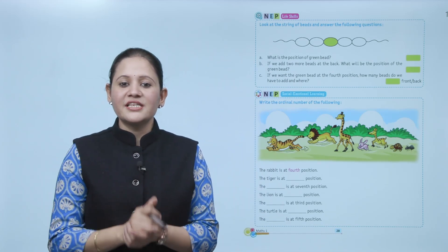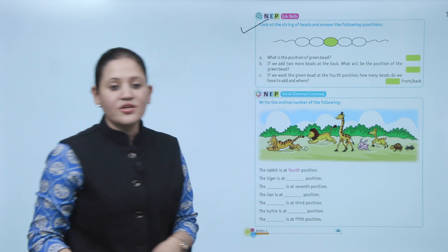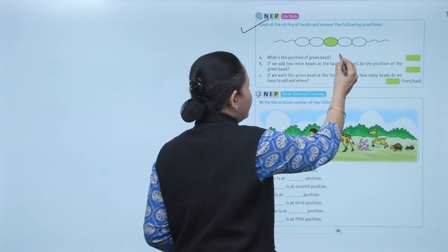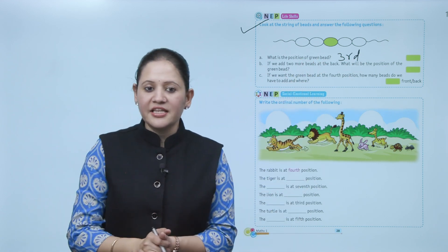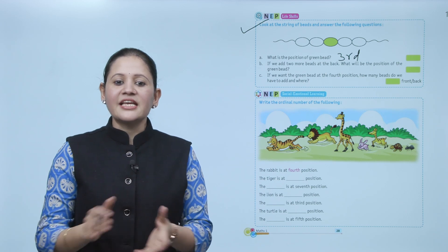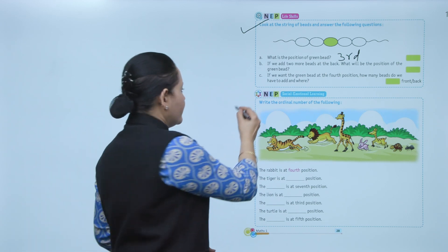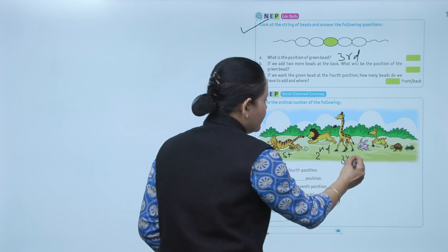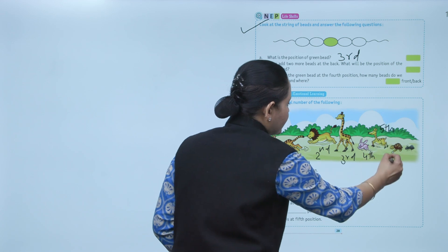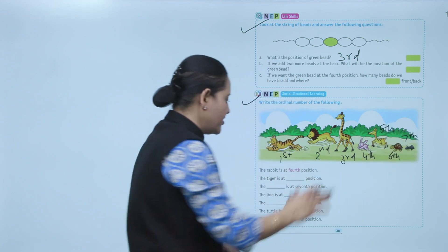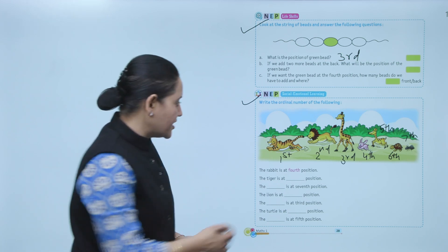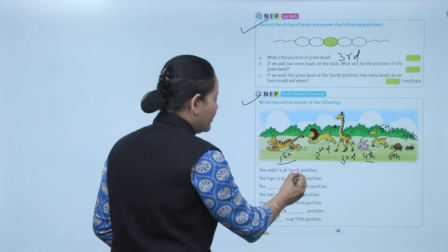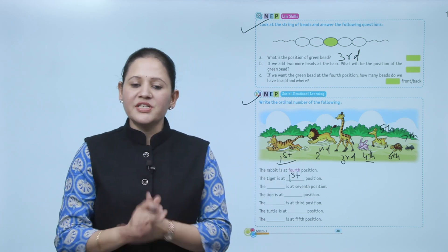Next, look at the string of beads and answer the following questions. First question: what is the position of the green bead? Start from the left: 1st, 2nd, 3rd — the green bead is in the third position. Next, write the ordinal number of the following: positions are 1st, 2nd, 3rd, 4th, 5th, 6th, and 7th. The rabbit is at 4th position — 1, 2, 3rd, 4th. The tiger is at 1st position. According to the given question, write their positions.